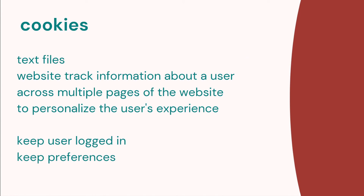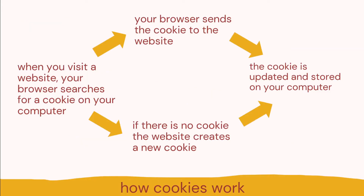Privacy. Cookies are text files that are used to track information about the user. If you use a browser and go to web pages, you have a text file from the web page that gives details about what you've been searching for. This can be used to personalize your experience, for example when shopping, and helps with things like keeping users logged in and storing preferences. When you visit a website, your browser looks for a cookie on your computer. If there is one, the browser sends it to the website; if not, the website creates one. The cookie is then updated with details from the website and stored on your computer.